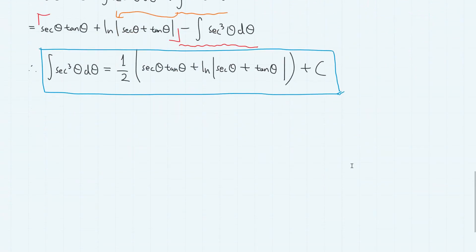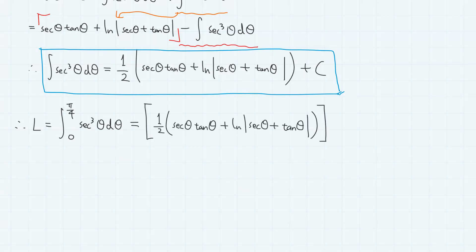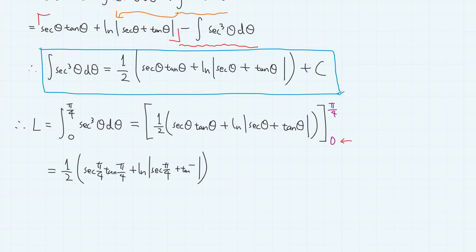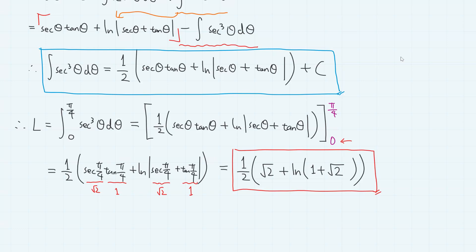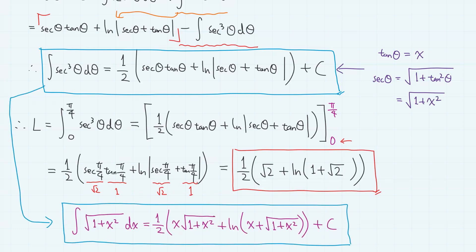Using this result, the length of the curve L equals this expression evaluated from 0 to π/4. When θ equals 0, the terms give us 0, so we only have one-half times sec(π/4)·tan(π/4) plus ln|sec(π/4) + tan(π/4)|, which gives one-half times the square root of 2 plus ln(1 + √2). And this is the length of the given curve. From this result, since tanθ equals x and secθ equals the square root of 1 plus tan²θ equals √(1 + x²), the antiderivative of √(1 + x²) is one-half of x√(1 + x²) plus ln(x + √(1 + x²)).